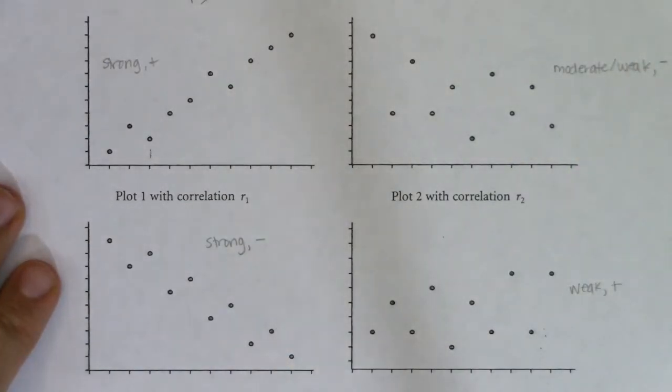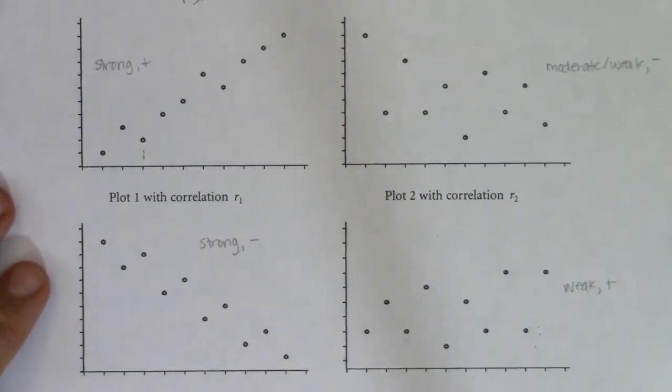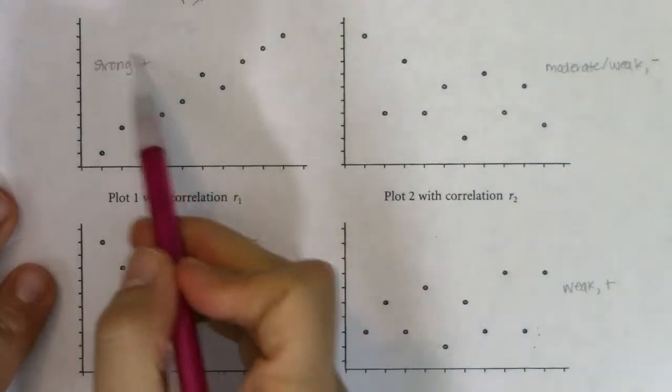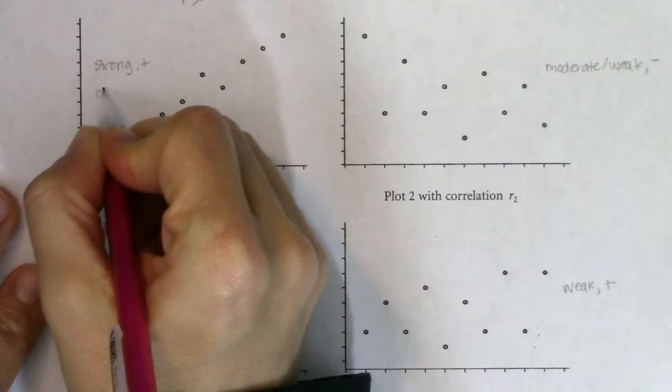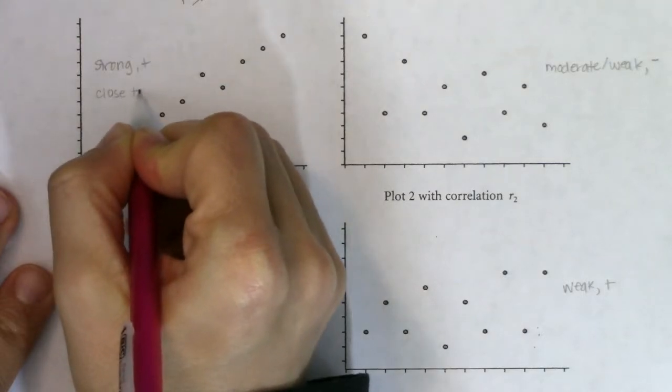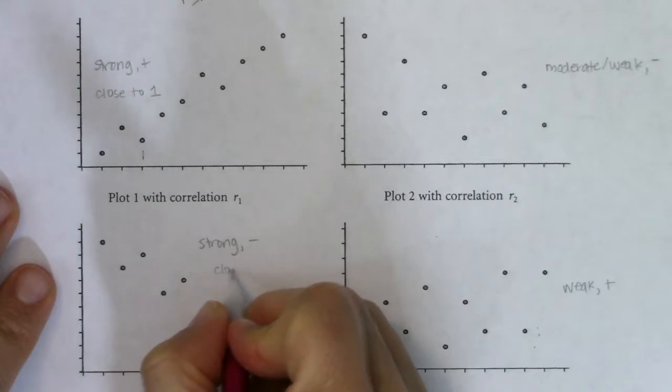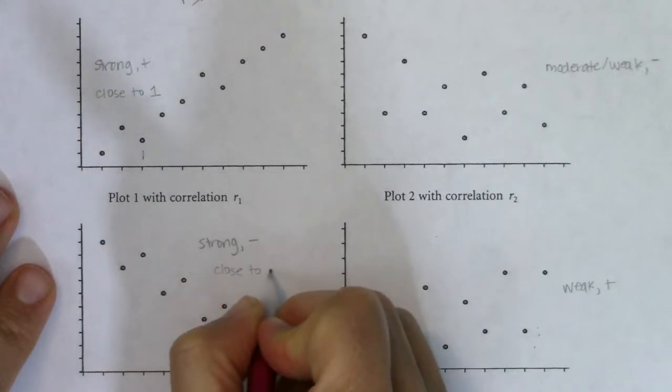All right, so those are the four categorizations of my number. So let's think about this. If it was strong and positive, this number is going to be close to positive one, right? And if this one's strong and negative, this is going to be close to negative one.